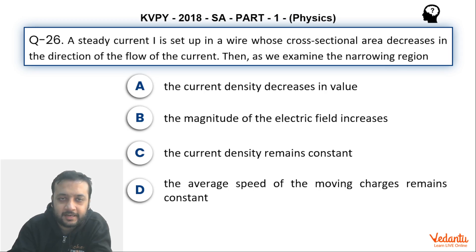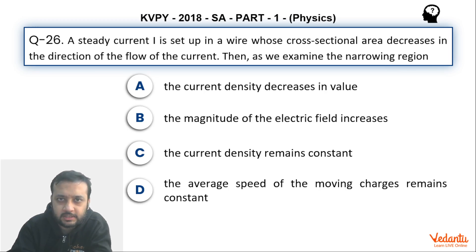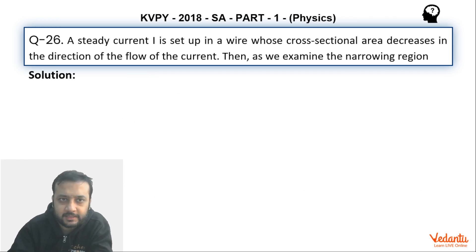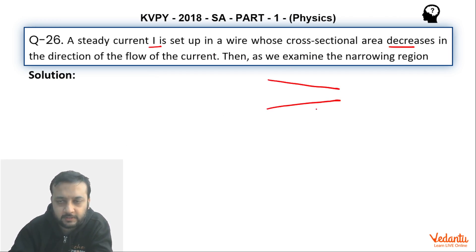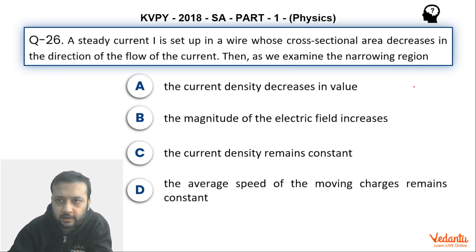Hi dear students, let's see this question that came in KVPY 2018 paper 1 physics. The question is based on the formula i equals to NQAVD. There were two questions in this paper based on this formula. Basically, a steady current i is set up in a wire whose cross-sectional area decreases, and current i is flowing in the forward direction. We have to choose the correct options according to the data.